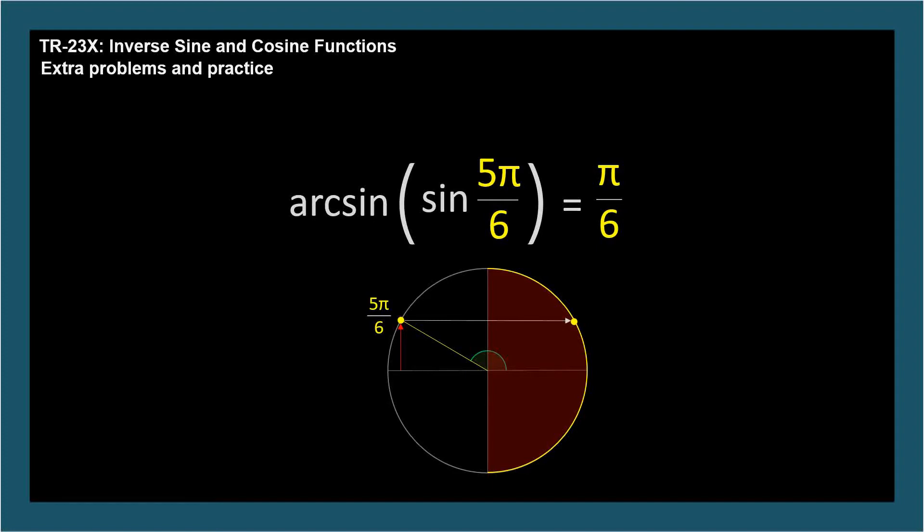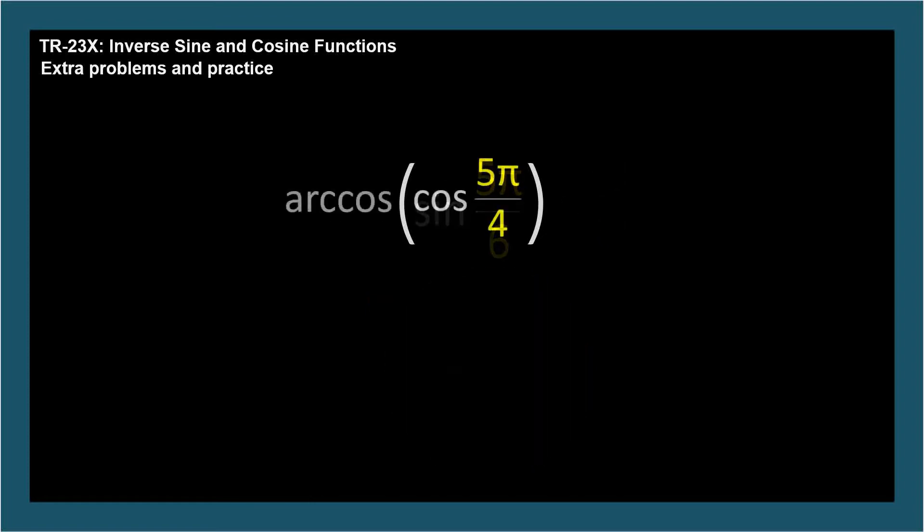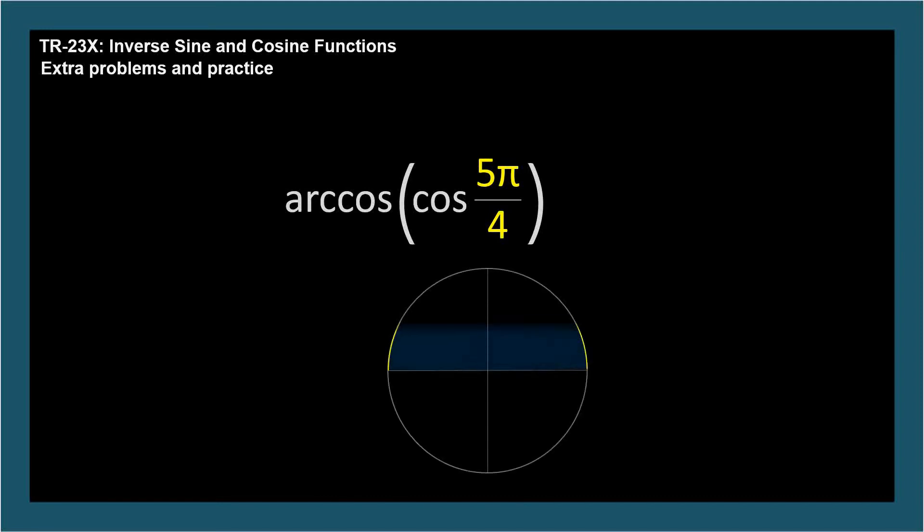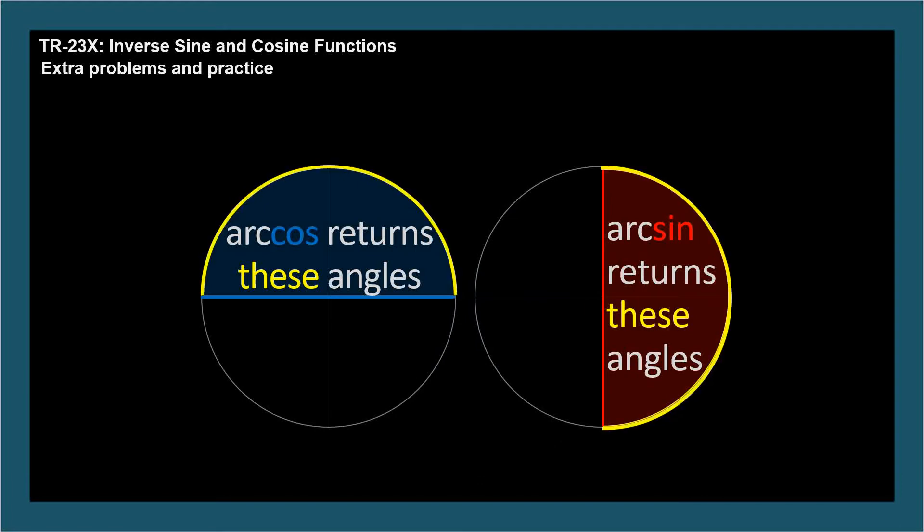Similarly, the arccosine of cosine pi over 2 is pi over 2, because pi over 2 is in the range of the arccosine function. But the arccosine of cosine 5 pi over 4 is 3 pi over 4, because the cosine of 5 pi over 4 is negative square root of 2 over 2, and the arccosine of negative square root of 2 over 2 is 3 pi over 4, not 5 pi over 4. Just remember that the inverse trig functions always return an angle in their range, and these circle images can help you see the range for each.